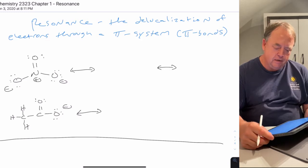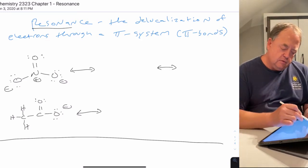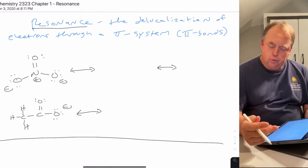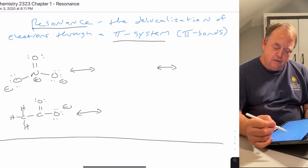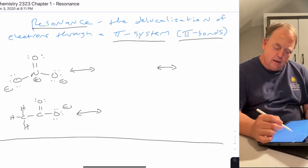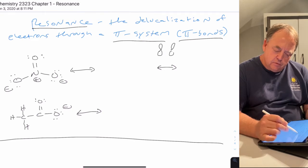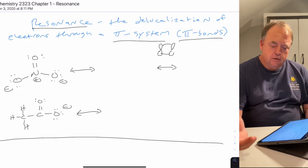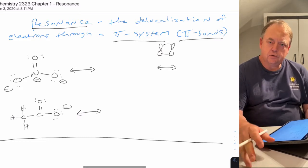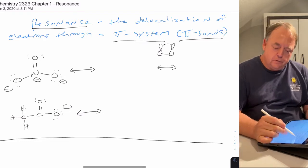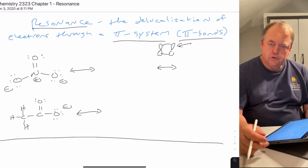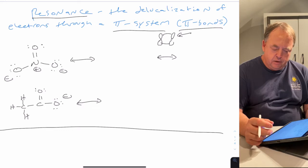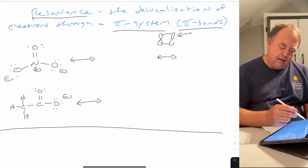So what is resonance? It's the delocalization — the movement of electrons through a pi system. Pi systems come from pi bonds, which are formed from p orbitals overlapping. If you don't have p orbitals, you can't draw resonance structures. Examples I use in general chemistry one include nitrate and acetate.